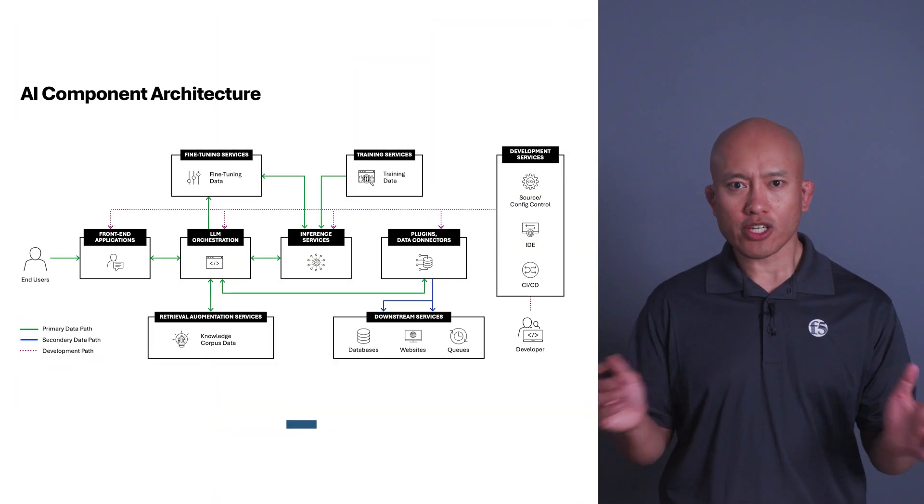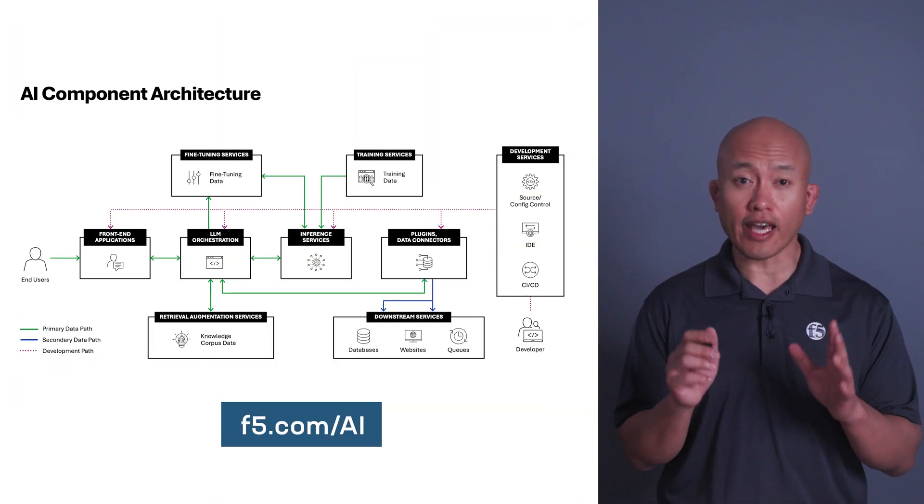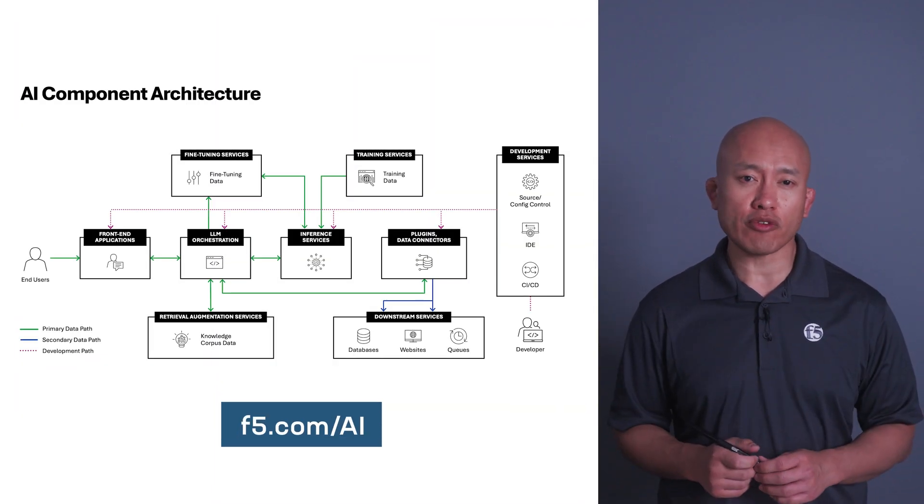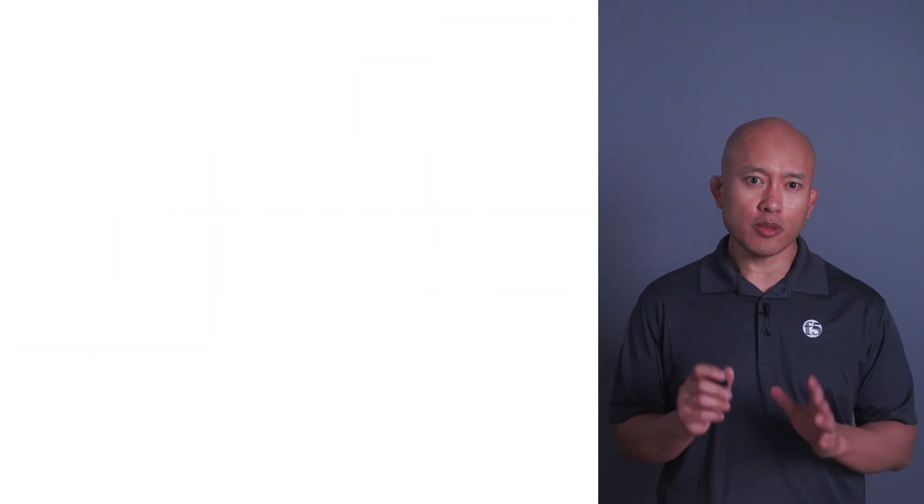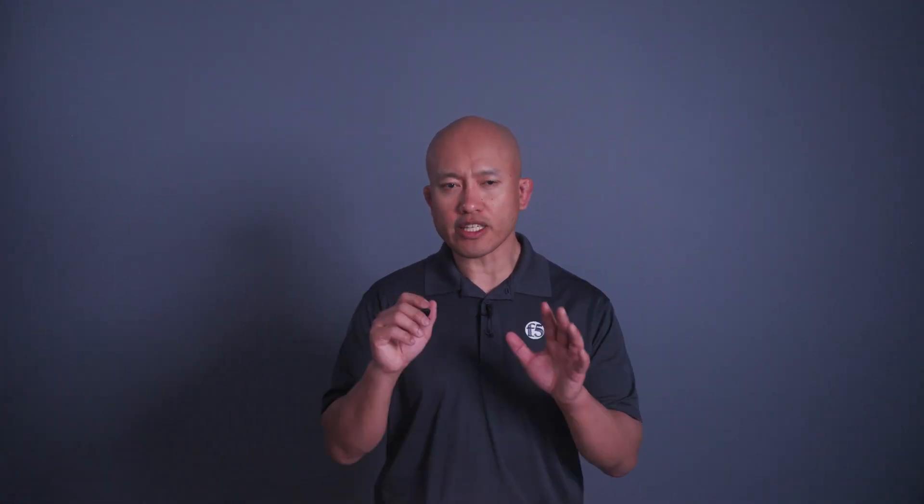On top of that, there's a significant data storage and data movement aspect in AI, whether for training or for retrieval augmented generation applications, which we'll dive into deeper. In fact, we documented all of what I just mentioned in the F5 AI reference architecture. But in this video, I'll take you through the key points.